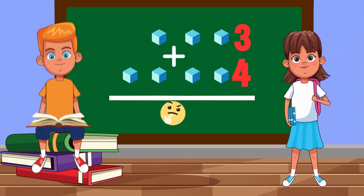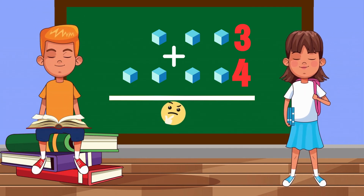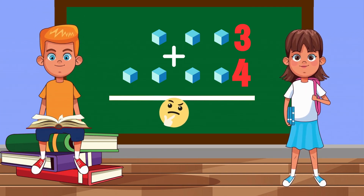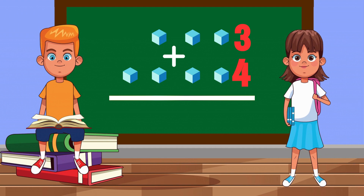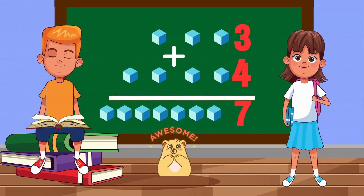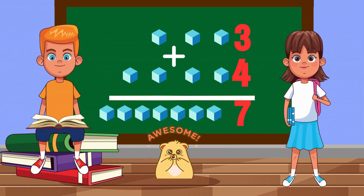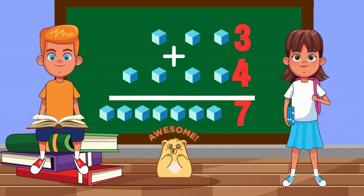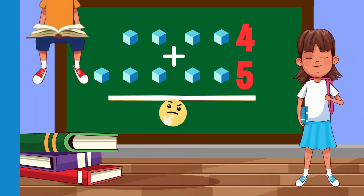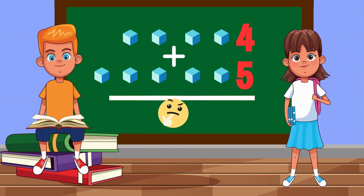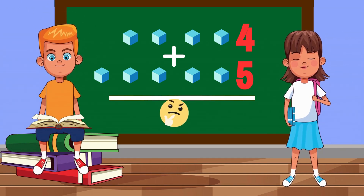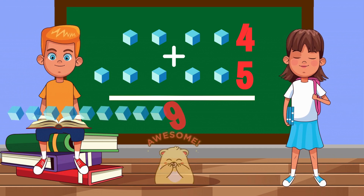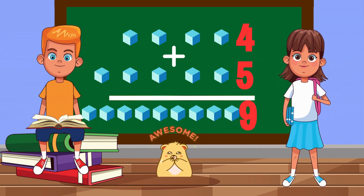3 cubes plus 4 cubes equals 7 cubes. 4 cubes plus 5 cubes equals 9 cubes.